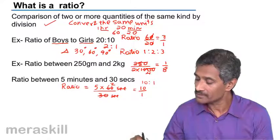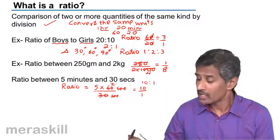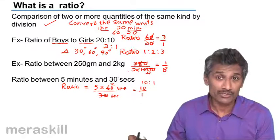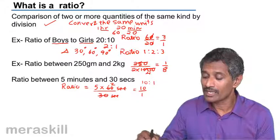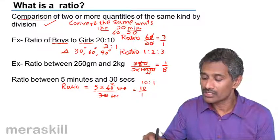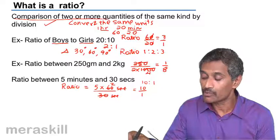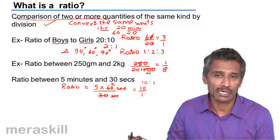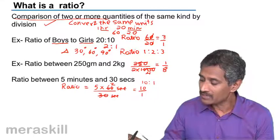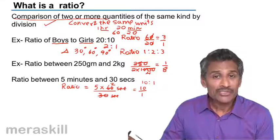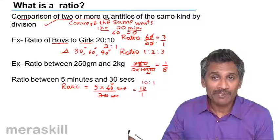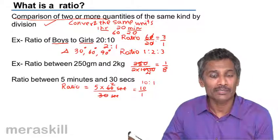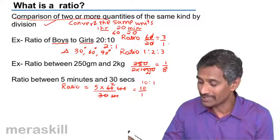The ratio of 30 seconds to 5 minutes is 1 is to 10. So summing up what we learned, there are 4 major rules. One: we can compare only quantities of two or more of the same kind. Two: the ratios have to be in the most simplified form — if there is any common factor between the two or more terms, we need to cancel them.